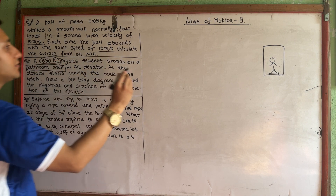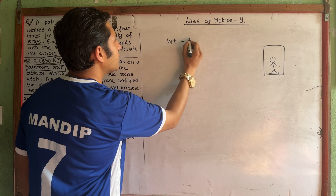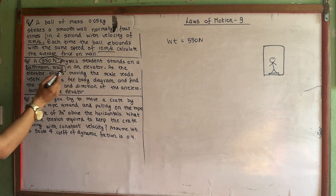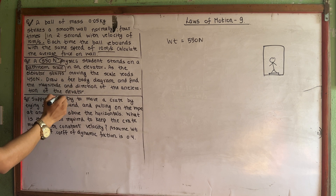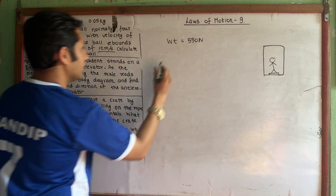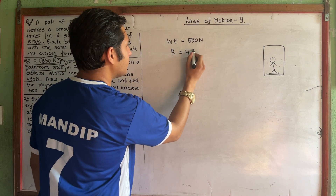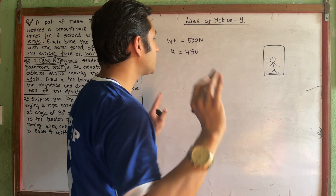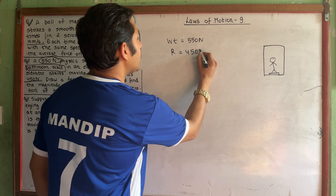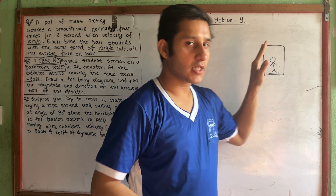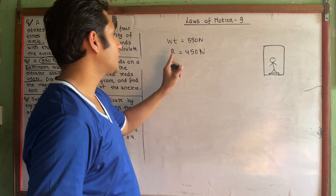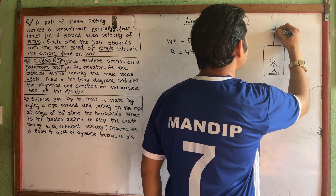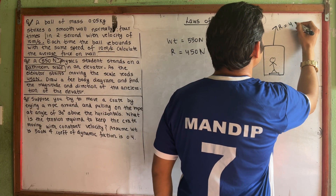In this case the student's weight is 550 N. But what do we see on the scale? On the scale we see 450 N. So R is equal to 450 N, where R is the normal reaction from the scale.